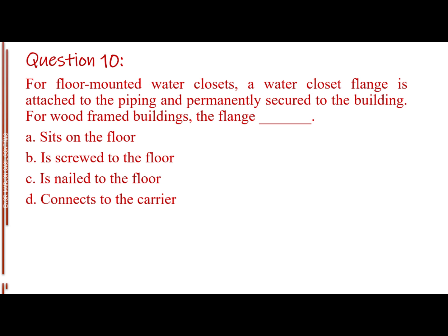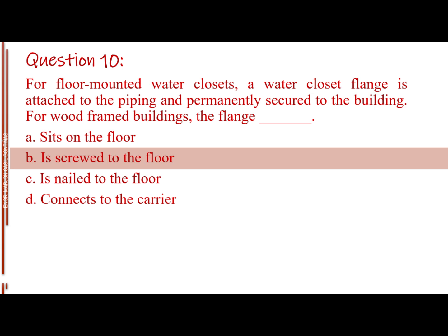Question number 10. A wall-hung water closet: Letter A, sits on the floor. Letter B, is screwed to the floor. Letter C, is nailed to the floor. Letter D, connects to the carrier. The answer is Letter B, is screwed to the floor.